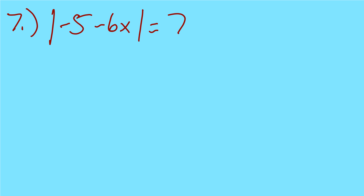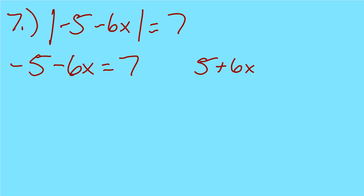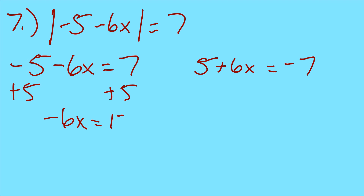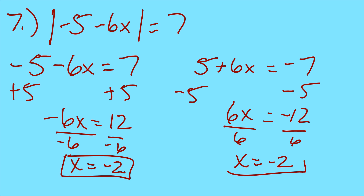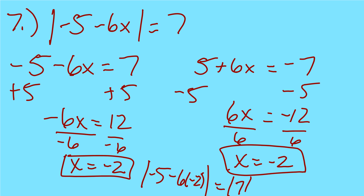Number 7: absolute value of negative 5 minus 6x equals 7. First time: negative 5 minus 6x equals 7. Second time: negative 5 minus 6x equals negative 7. Adding 5 and dividing by negative 6 gives x equals negative 2 for both equations. Plugging in: negative 5 minus 6 times negative 2 equals negative 5 plus 12, which is positive 7. The absolute value of positive 7 is 7, so negative 2 works for both.